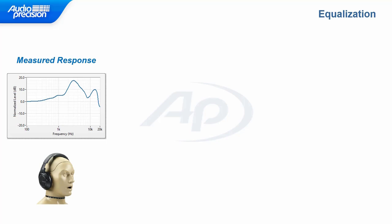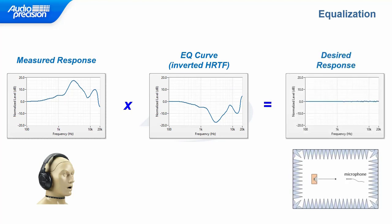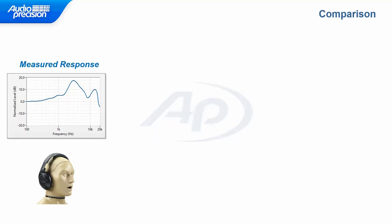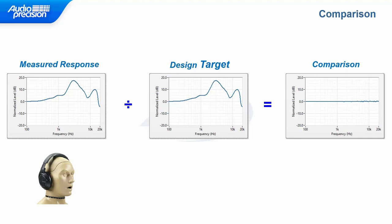A consequence of this is that you have to account for the HRTF when considering the measured frequency response of headphones. One approach is to take the measured frequency response, apply the inverted head-related transfer function as an equalization curve, and then evaluate the result against the desired response. In this case, we would evaluate the equalized response in terms of how closely it matches a perfectly flat curve. Another approach is to use the concept of a design target curve.